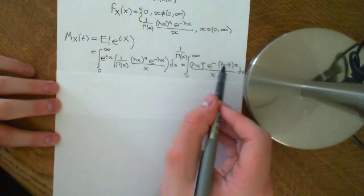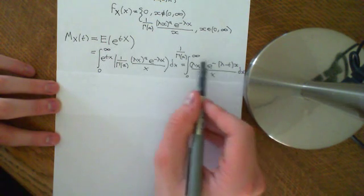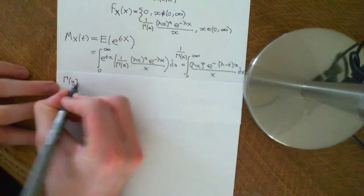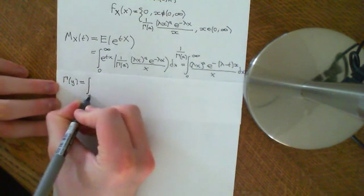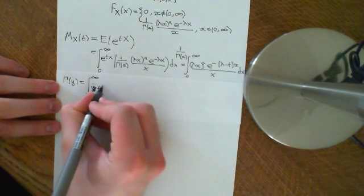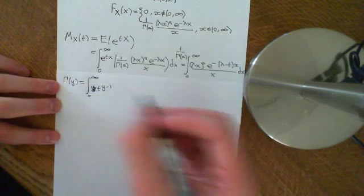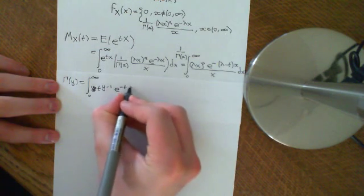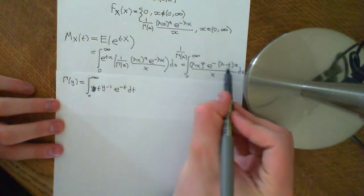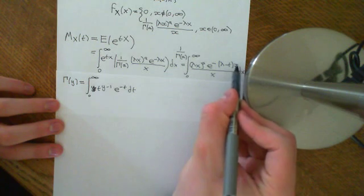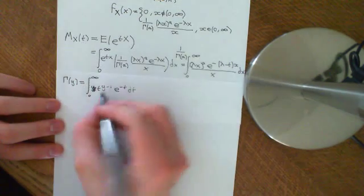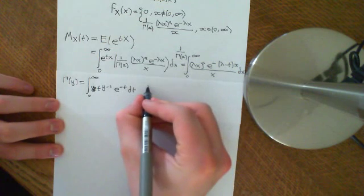What we're hoping is that we're going to be able to reduce this integral down to something that looks like a gamma function. The gamma function of some variable y is defined to be equal to the integral from 0 to infinity of t to the power of y minus 1, where t is just some dummy variable which is going to be integrated out, times e to the negative t dt. So that's what we're aiming for — we want to get a single variable up in this exponential.